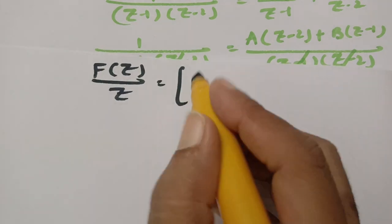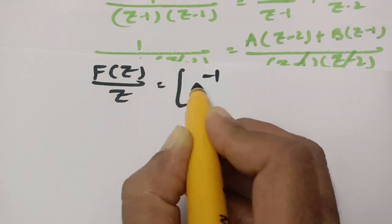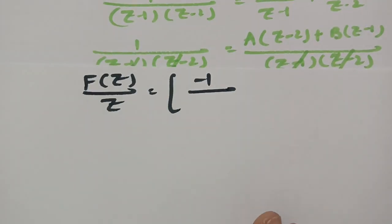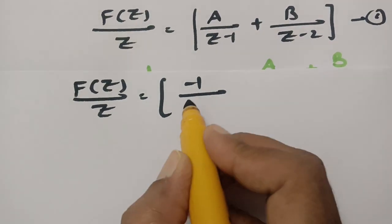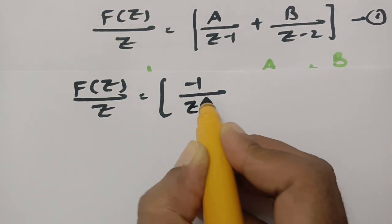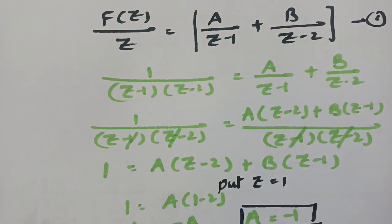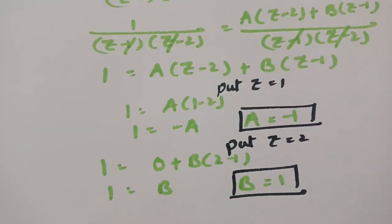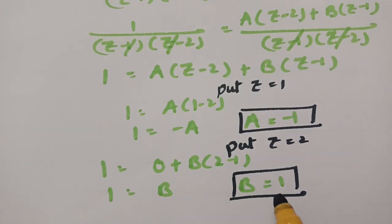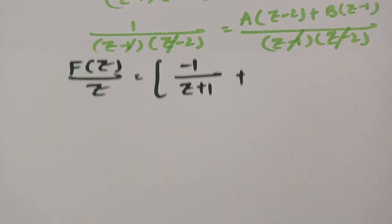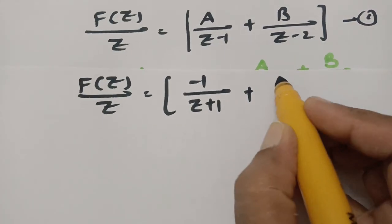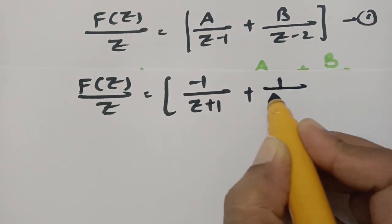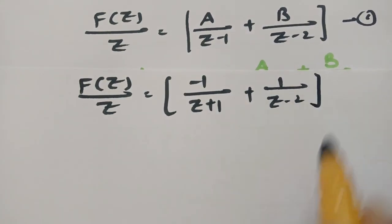So F of Z by Z equals minus 1 by Z minus 1, plus B value, which is 1, giving plus 1 by Z minus 2.